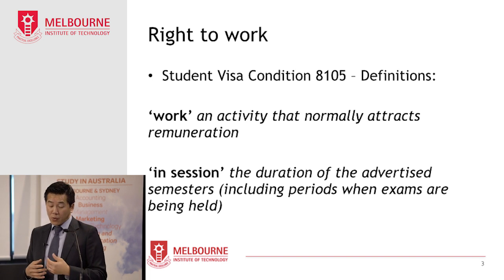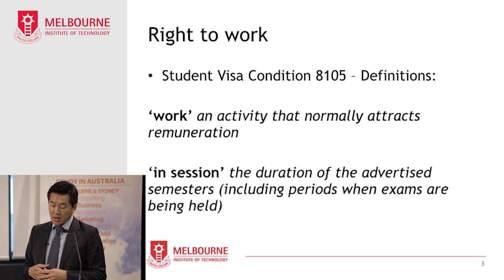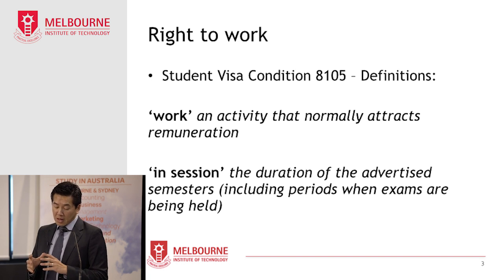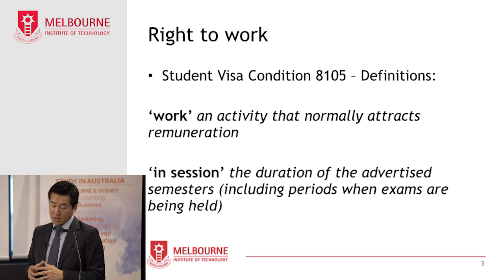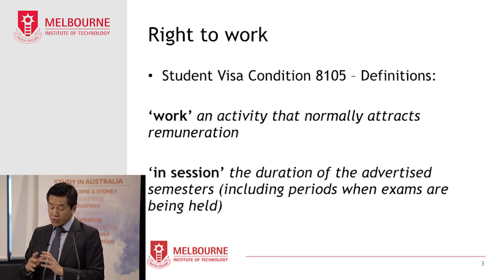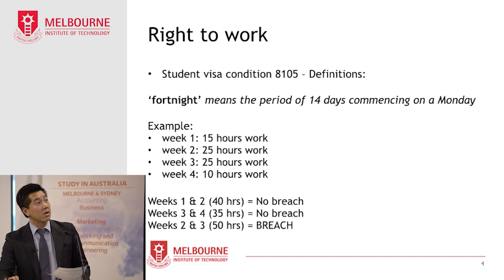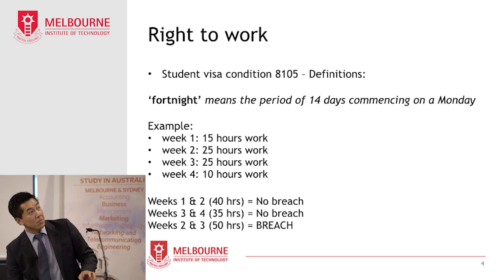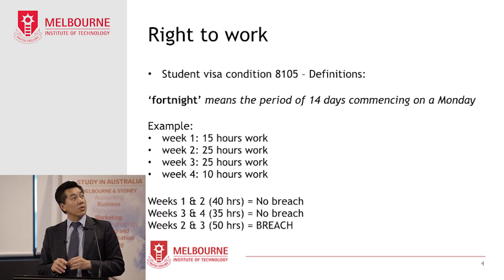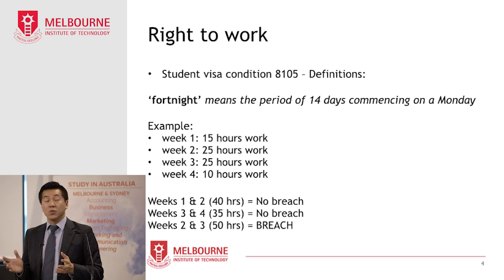Fortnight means a period of 14 days commencing on a Monday. It's important to note that 40 hours a fortnight relates to each 14-day period commencing on a Monday and can't be averaged over the duration of your course. So for example, let's say you have a student who works the following hours over a period of 4 weeks.